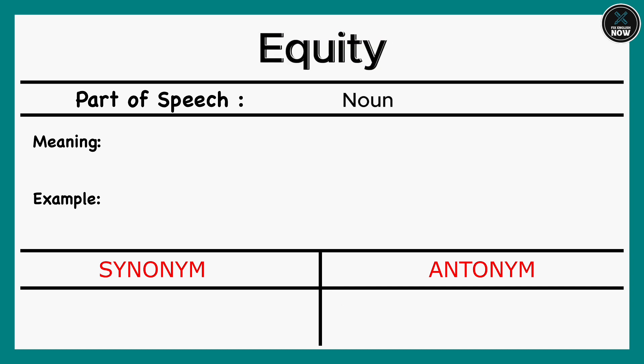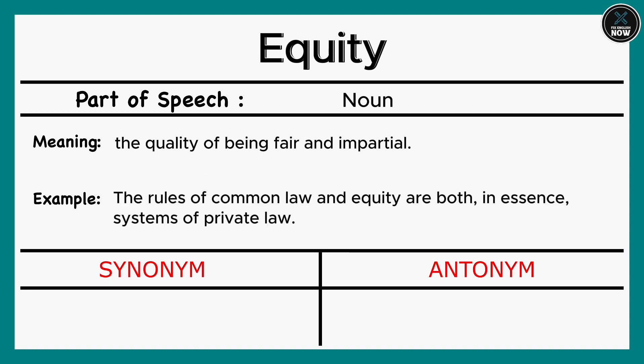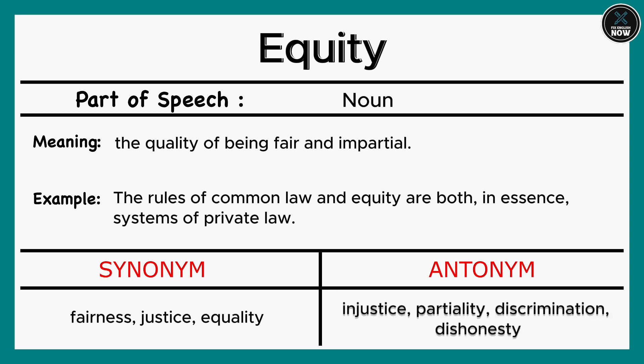Equity: The quality of being fair and impartial. Example: The rules of common law and equity are both, in essence, systems of private law. Synonyms: Fairness, Justice, Equality. Antonyms: Injustice, Partiality, Discrimination, Dishonesty.